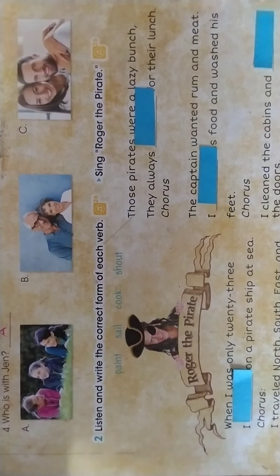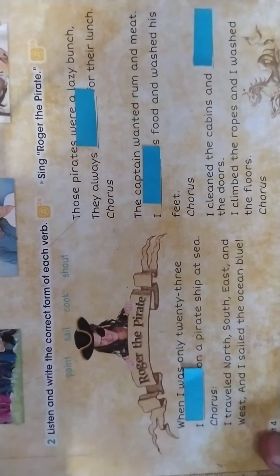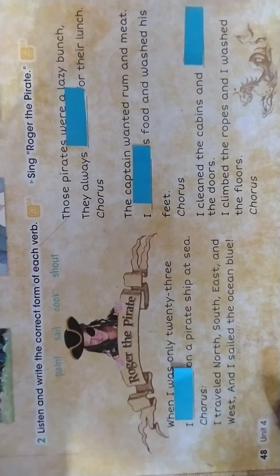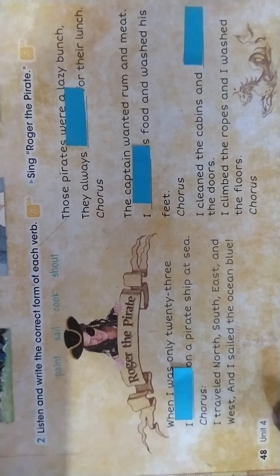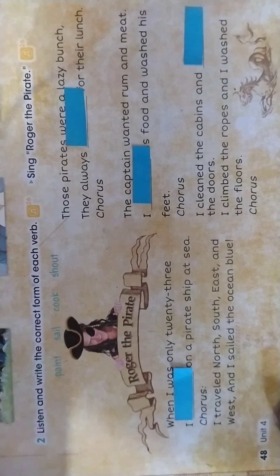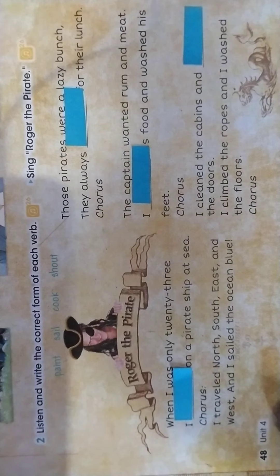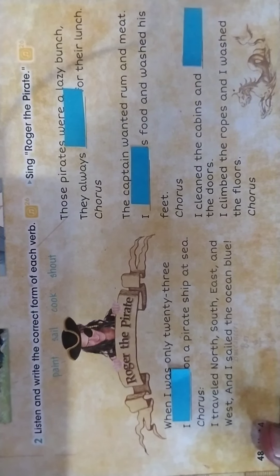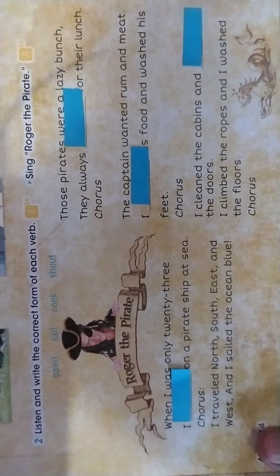Now here we have another exercise, this time with verbs — the verbs in the past form. The verbs in question are: paint, sail, cook and shout. All of them are regular verbs. So what happens with regular verbs? You only need to add ED at the end of the word. For example: paint — painted; sail — sailed; cook — cooked; shout — shouted. I do not have the audio right now, but you can stop the video and play audio 26 on your books, the CD that is on your book, page 48. The audio number is 26.